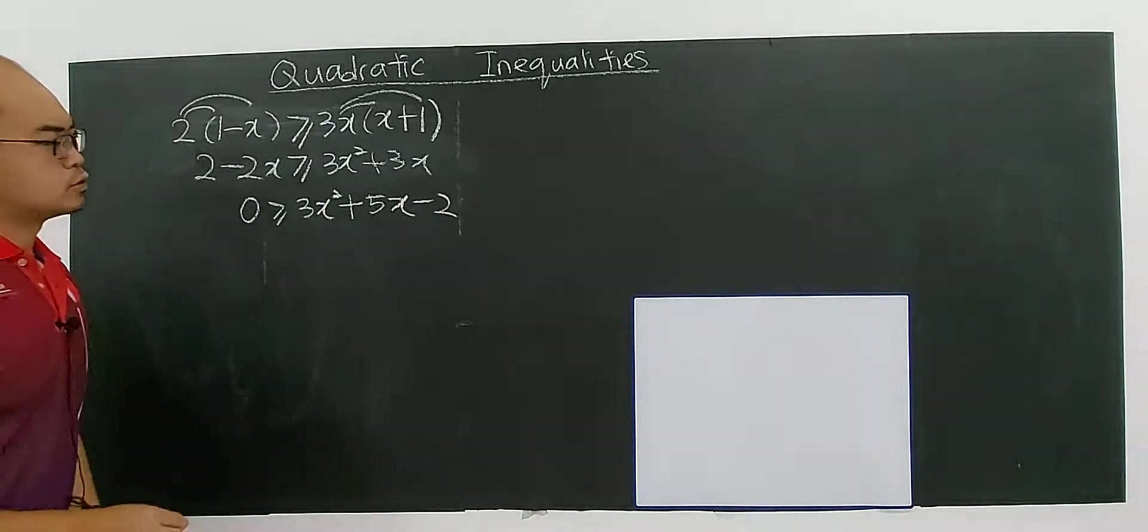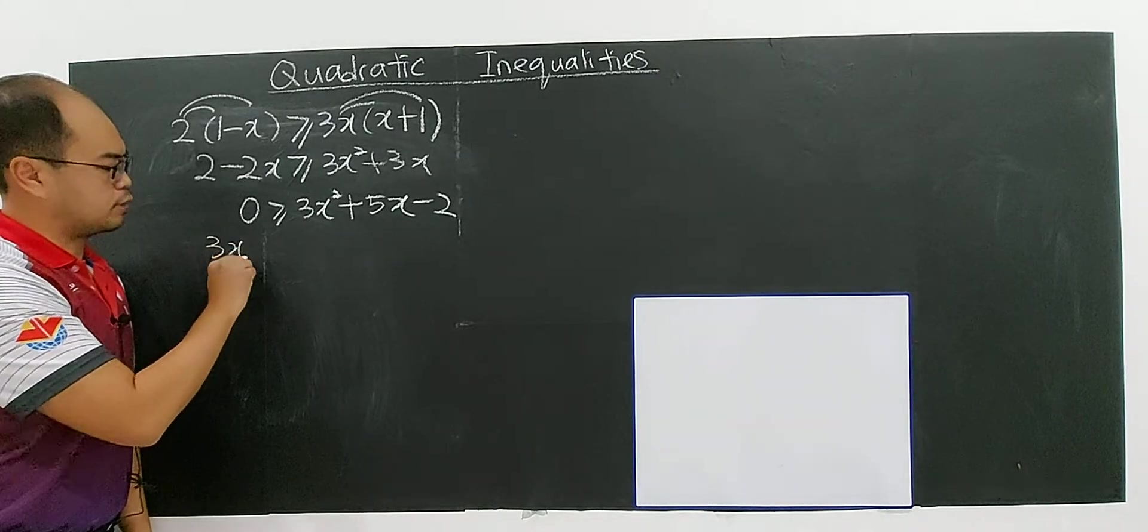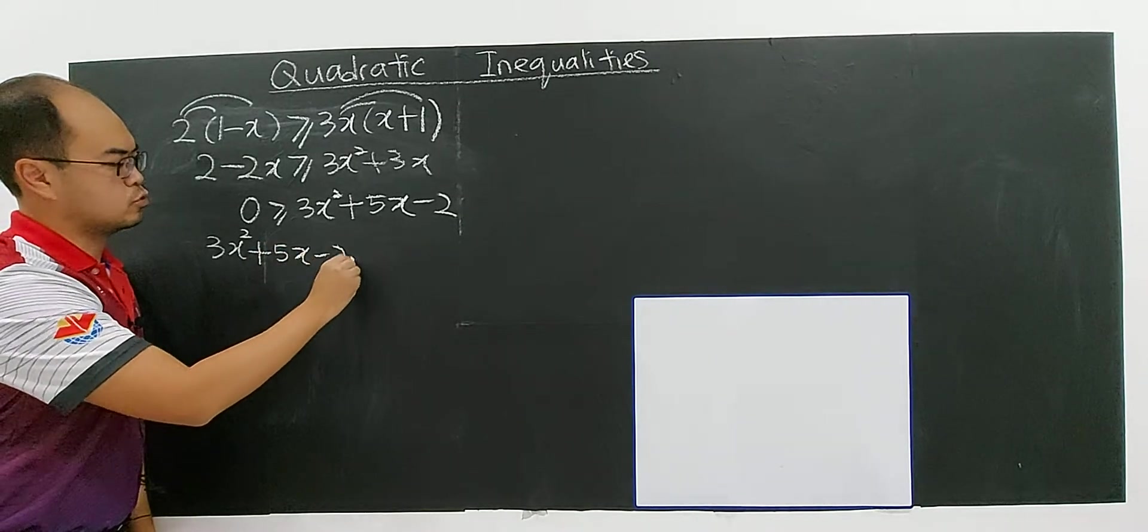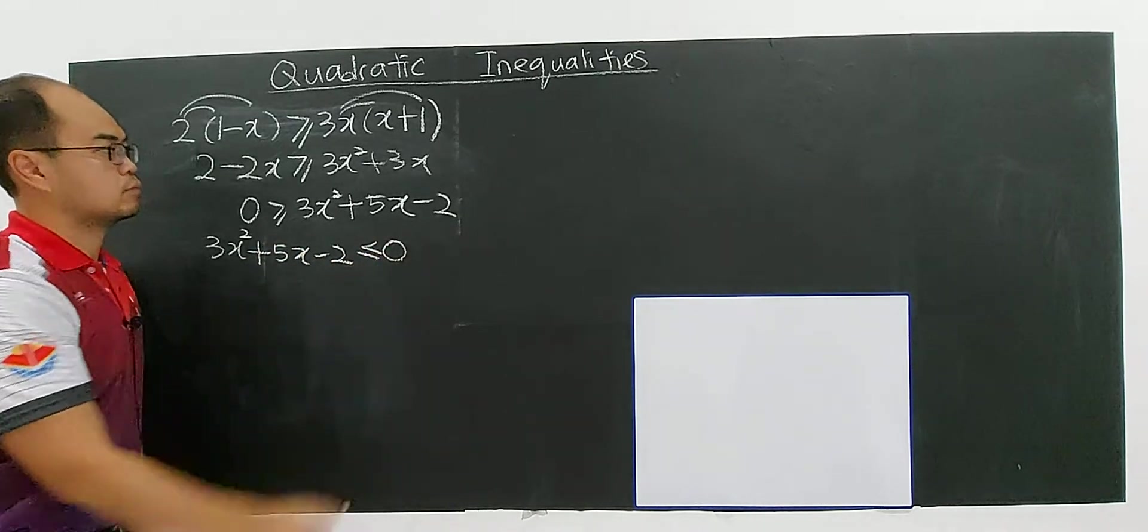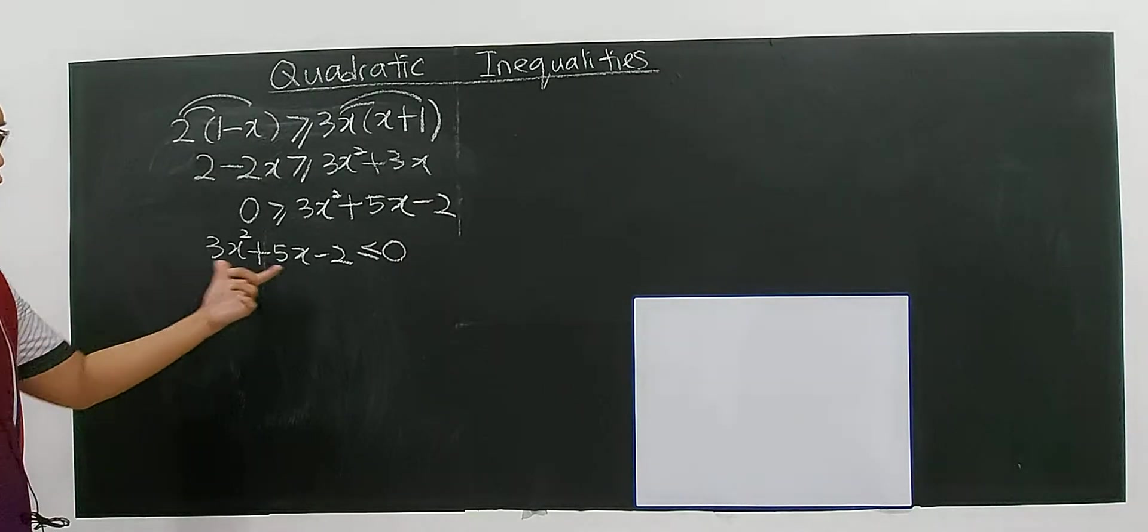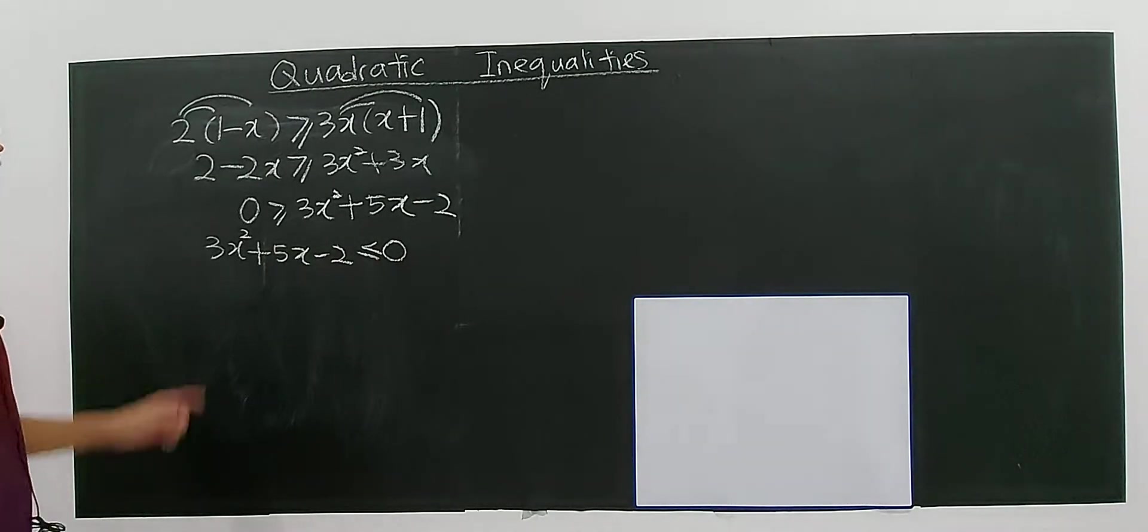Okay, so this one you can rewrite as 3x to the power of 2 plus 5x minus 2 less or equal 0. Then you have this quadratic form which is an inequality. Quadratic inequality.